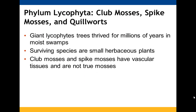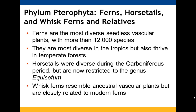Lycophyte trees lived for many years in moist swamps, and the small herbaceous plants that exist now are the ones that survived. Club mosses and spike mosses don't have true vascular tissues, so they aren't considered true mosses. The pterophytes — the ferns — are very diverse in the tropics and temperate forests. Whisk ferns look a lot like the ancestral vascular plants but are related to modern ferns.